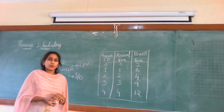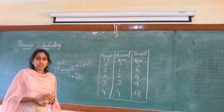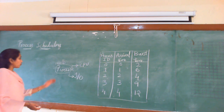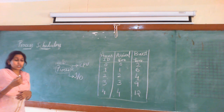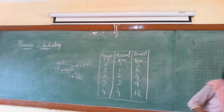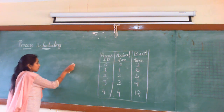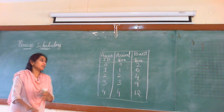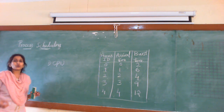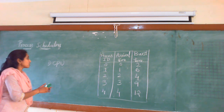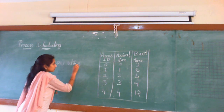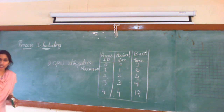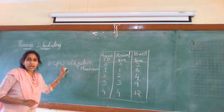We have a few scheduling algorithms, and today we are going to discuss the first come first serve scheduling algorithm. When discussing this, whenever we are selecting a process, the CPU should not be free — that means the CPU should not be idle. The process selected should ensure maximum CPU utilization.